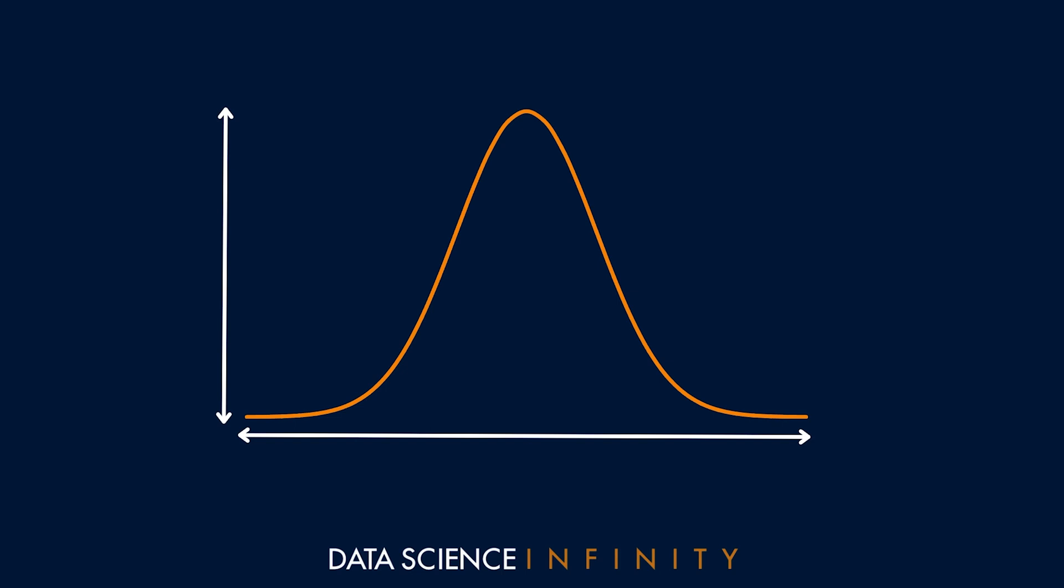And to build more on what we've spoken about so far, distributions like this really only have two key parts that describe them. They have a mean, and that could be anything depending on what we're measuring. In our example, this was the average height of an NBA player, and we said that this was equal to 200 centimeters.